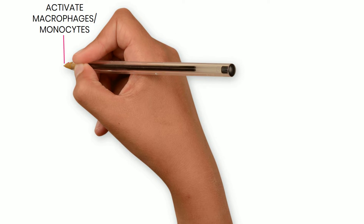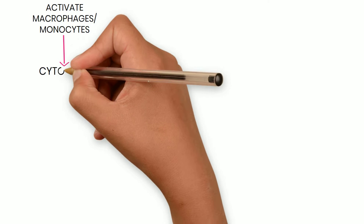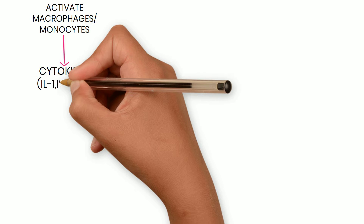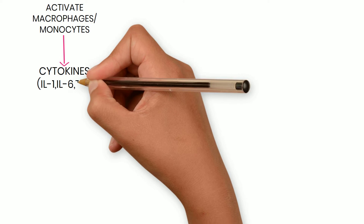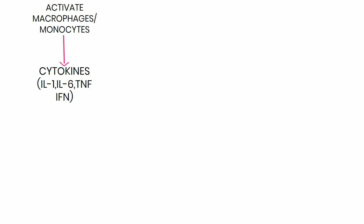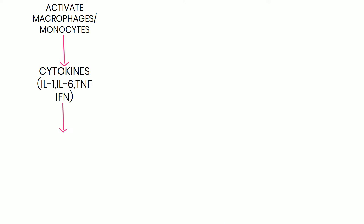Endogenous causes involve cells that produce cytokines. These cytokines are produced in the systemic circulation and are called pyrogenic cytokines — interleukins (IL-1, IL-6), tumor necrosis factor, and interferons — but they circulate in the bloodstream.